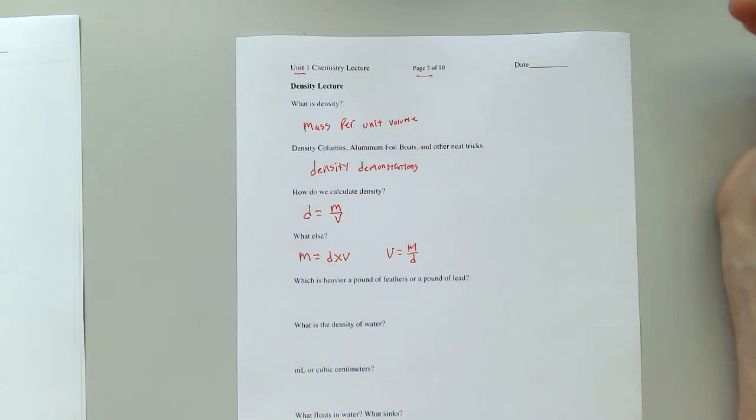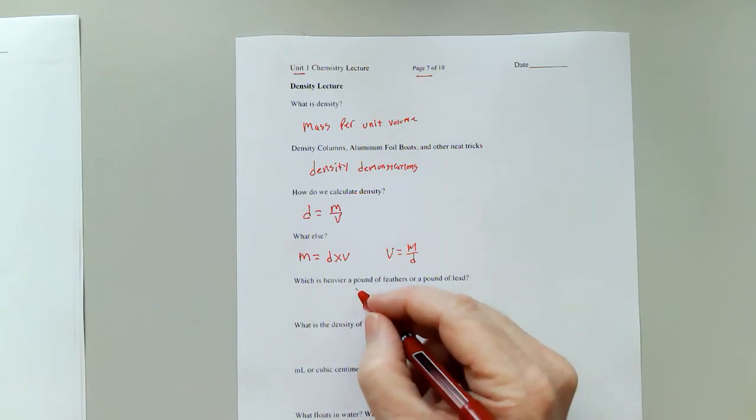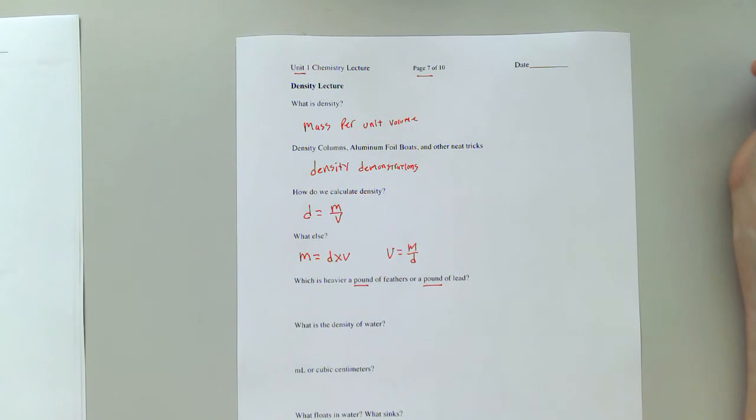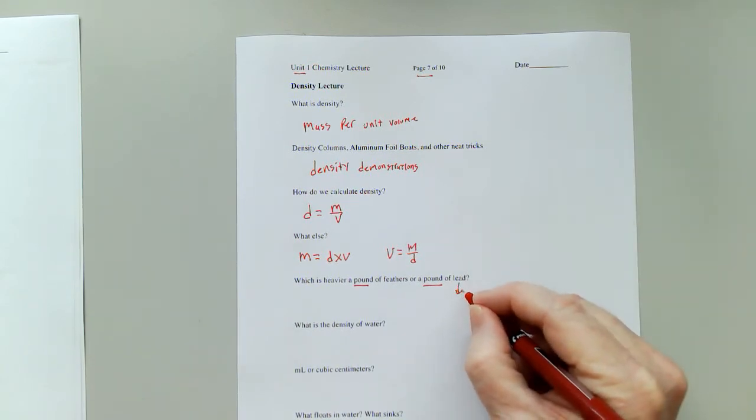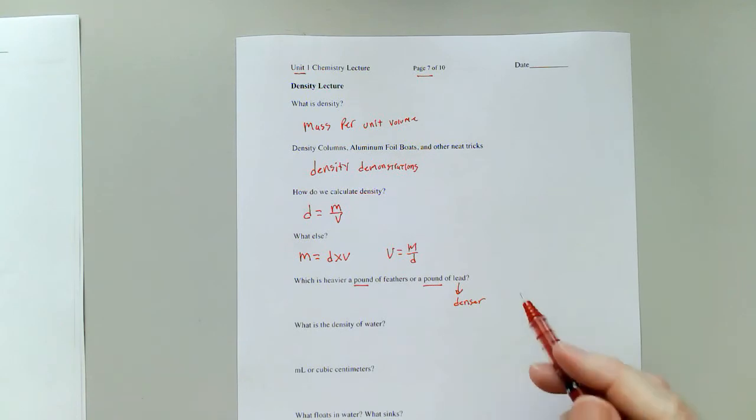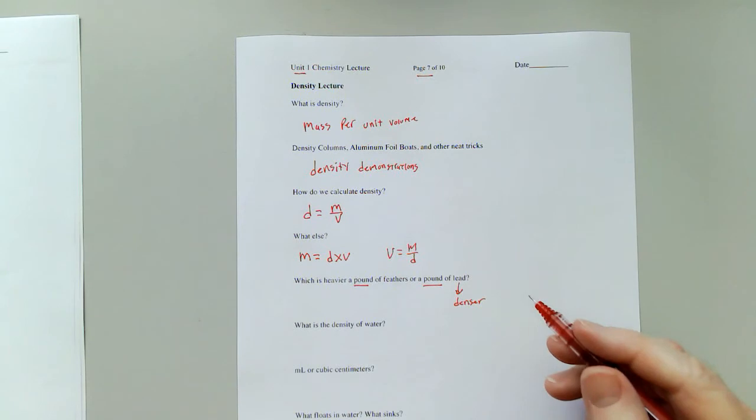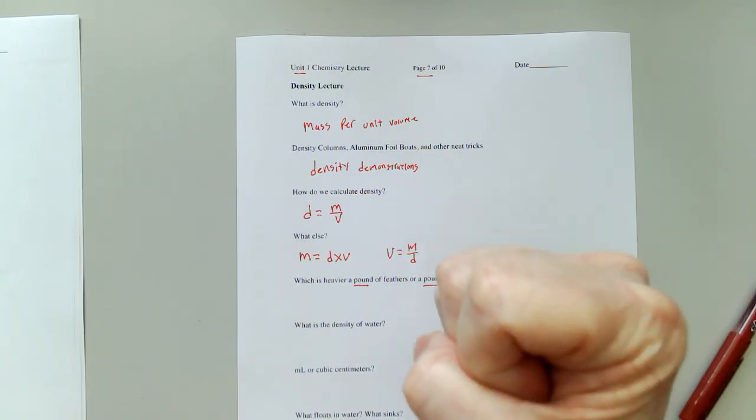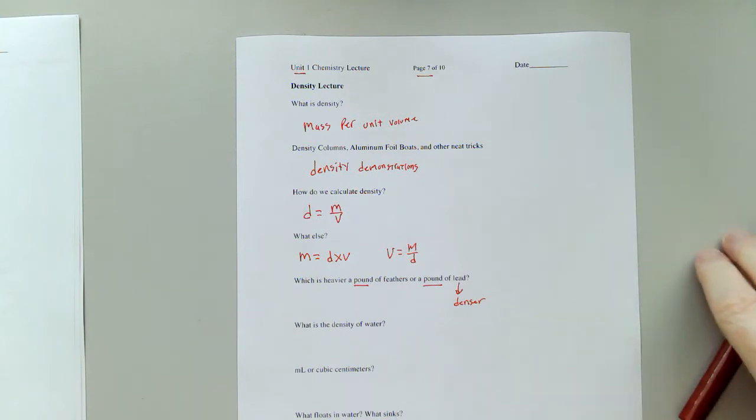So a very classic brain teaser, which is heavier? A pound of feathers or a pound of lead? They both have a weight of one pound. Neither is heavier. The difference is the lead is denser, which means that it doesn't take up as much volume as the pound of feathers. A pound of feathers might be the size of a bedroom pillow, whereas a pound of lead is probably not much bigger than your fist.